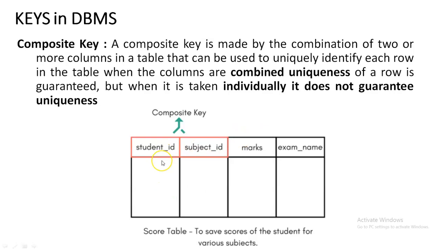The next one is Composite Key. Consider a table with attributes StudentID, SubjectID, Mark, and ExamName. When inserting a mark, you cannot use StudentID alone as a unique column, because a student may be enrolled in multiple subjects. You must also know the SubjectID. Similarly, SubjectID alone is insufficient because you wouldn't know for which student the mark is being entered. Together, StudentID and SubjectID form a unique combination — this is called a Composite Key.